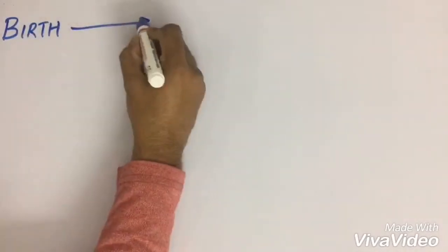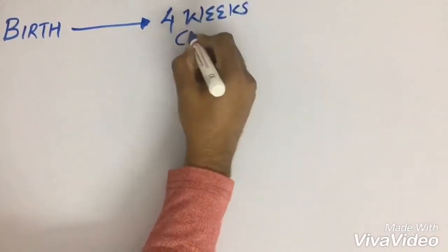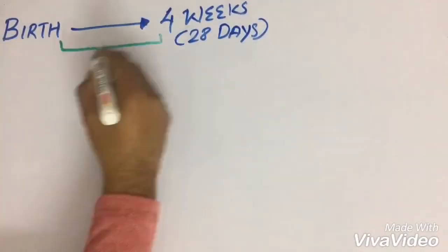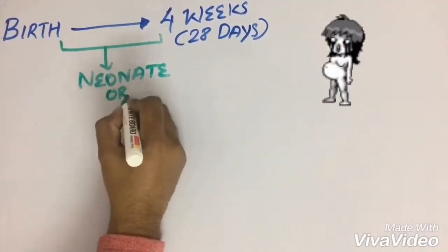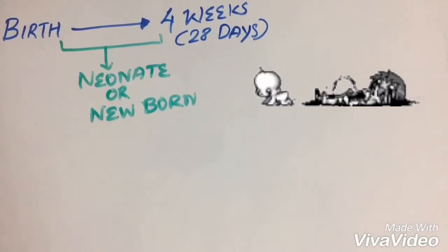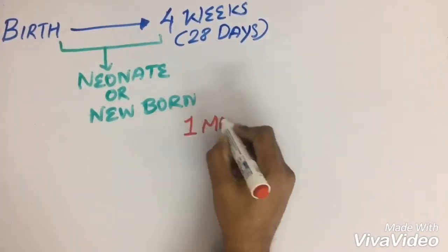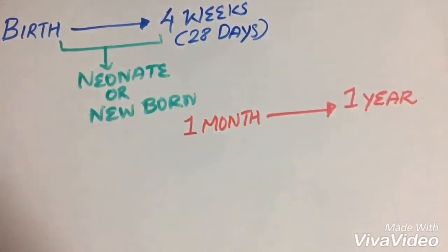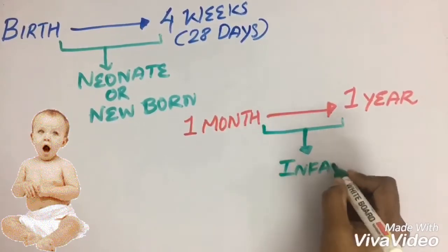From birth to four weeks after birth, we have to call this baby as neonate or newborn. From one month after birth to one year, we call this baby as infant.